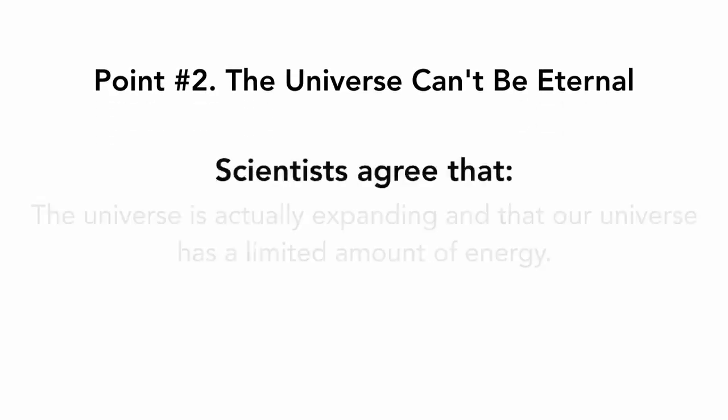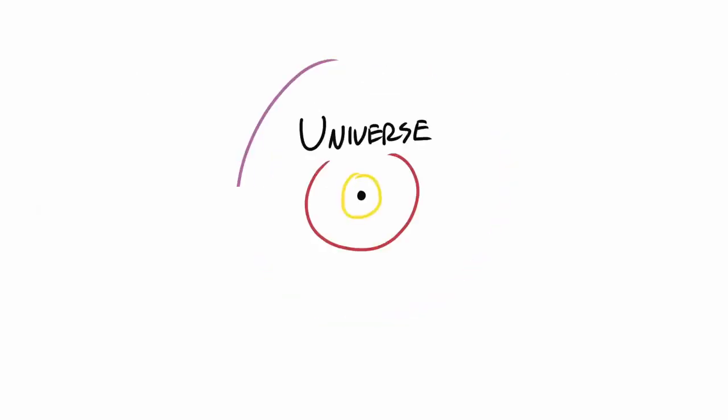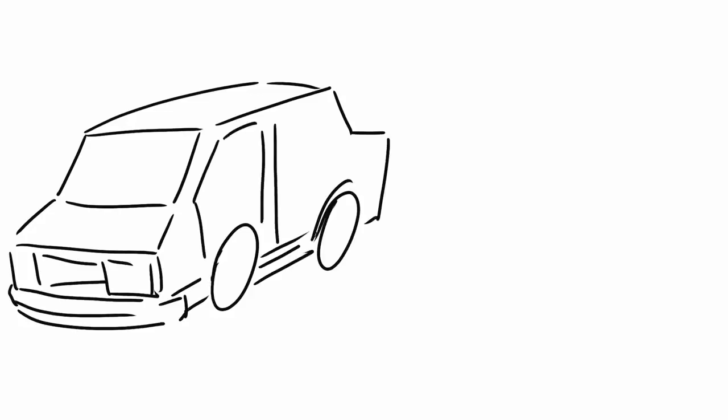Point number two, the universe can't be eternal. Science tells us that our universe is actually expanding and that our universe has a limited amount of energy. Now, if our universe is expanding and we were to reverse time, our universe would just be a little bit smaller than it is today. And if we rewinded time over and over again, we would eventually be at a place where the universe started at a single point.